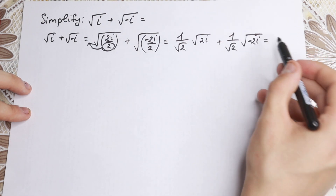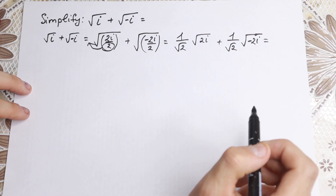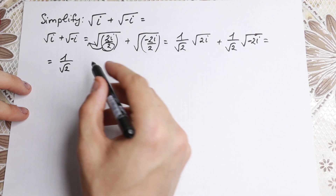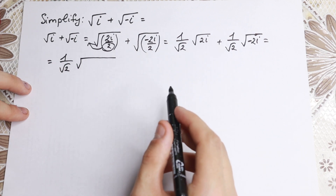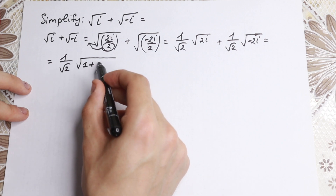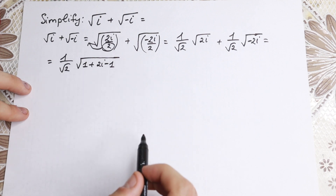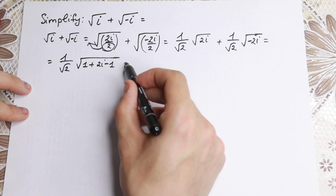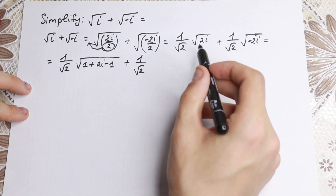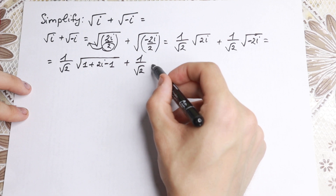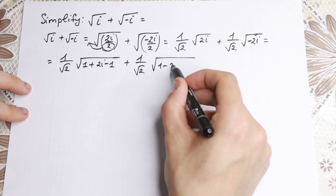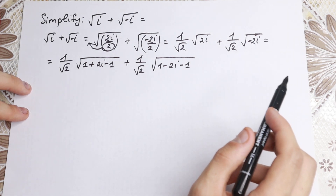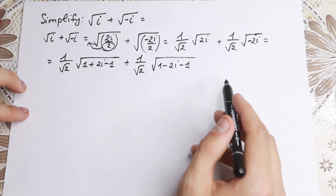Why is this approach useful? Because now I want to show a really good trick. Let's write the first term as 1 over square root of 2, and inside the square root sign I write it as 1 plus 2i minus 1. For the second element I write the same thing: 1 over square root of 2, and inside the square root as 1 minus 2i minus 1. If we cancel the 1s, we have the same as before — but now I write it this way because I want to complete perfect squares.